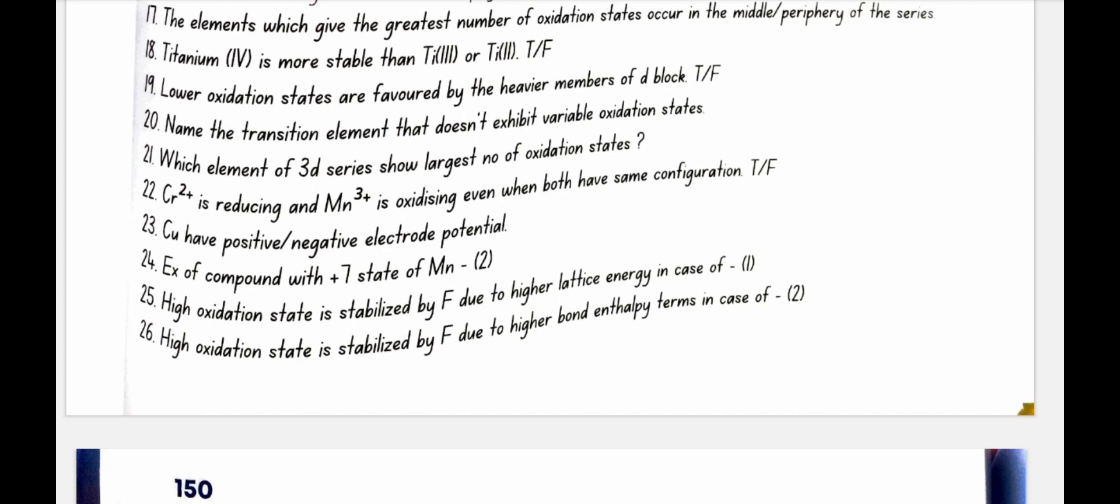Which element of 3D series show largest number of oxidation states? MN, manganese. Cr2 plus is reducing and MN3 plus is oxidizing even when both have same configuration. Yes, true.